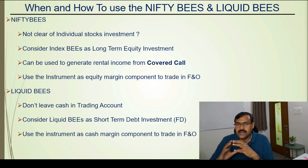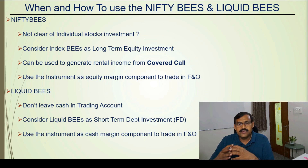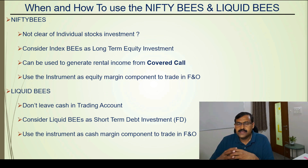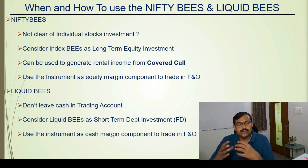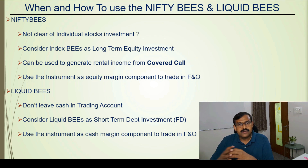For liquid bees: whenever you have a sizable amount of cash in your trading account, don't leave it idle — it is not earning anything. It is better to buy liquid bees, pledge them to get margin as a cash component, and use that margin to trade in F&O. This way you earn interest from liquid bees and reuse that margin money to trade, increasing your overall return. Personally, I buy nifty bees and use them for covered calls, and I maintain a cash component in liquid bees as the cash margin for my F&O trading. I hope you learned something — please press the like button, thank you!